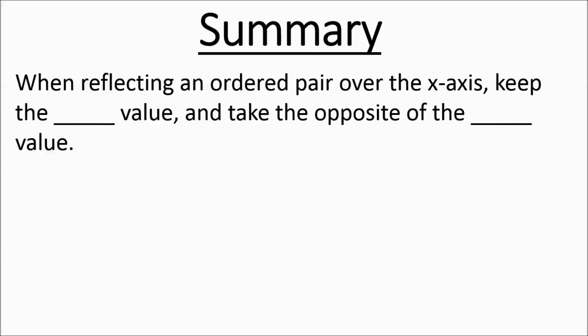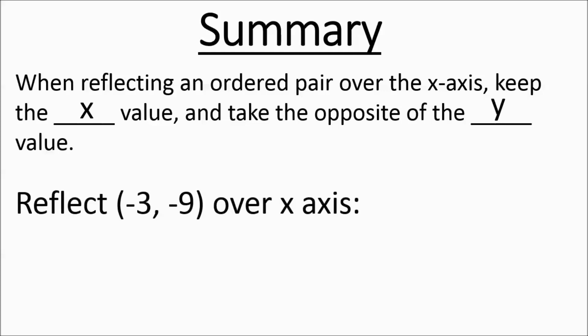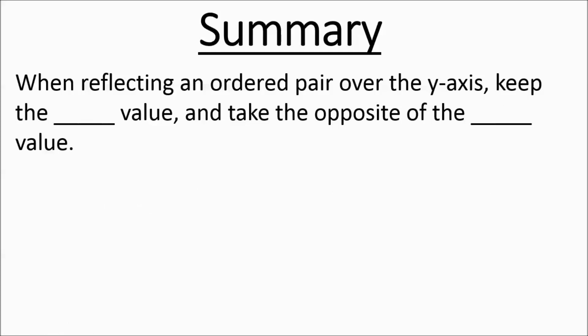Here's a summary. An ordered pair is an x, y in parentheses. When reflecting an ordered pair over the x-axis, keep the x-value and take the opposite of the y-value. For example, reflecting negative 3, negative 9 over x gives you negative 3, 9 — the opposite of negative 9 is 9. When reflecting an ordered pair over the y-axis, keep the y-value and take the opposite of the x-value.